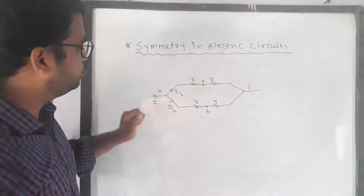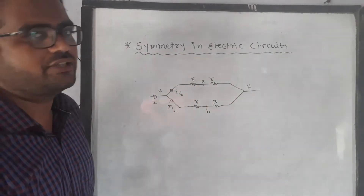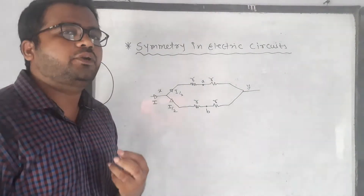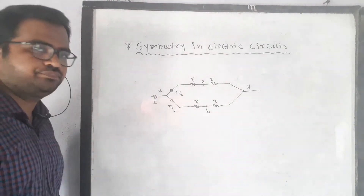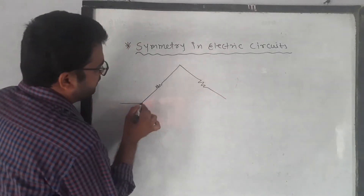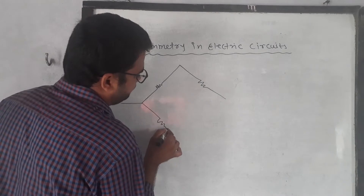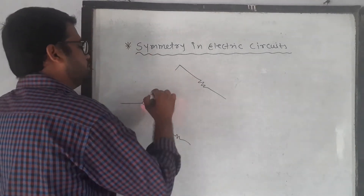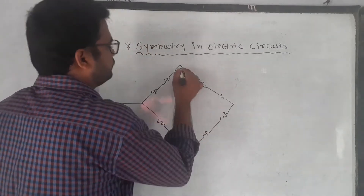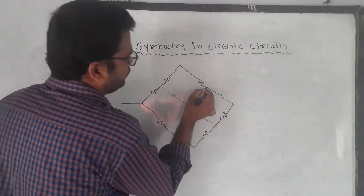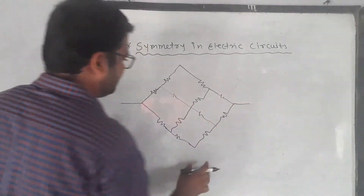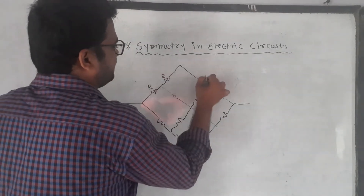Now I will show how to solve a more complicated problem using symmetry. I'll explain all the rules of symmetry using this problem. We have a circuit where all resistances are R. One end is connected to the first terminal of the battery and the other end to the second terminal.